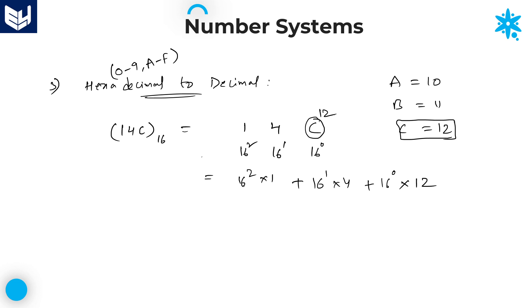16 squared into 1 is 256. Plus 16 into 4 is 64. Plus 1 into 12 is 12. Now you can add all these values: 6 plus 4 is 10, 10 plus 2 is 12. Carrying forward: 256 plus 64 plus 12 gives 332.